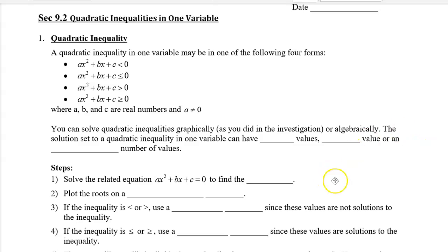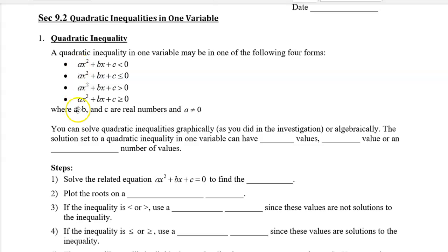We can take a look at these first four inequalities over here. These are all quadratics — you can tell that because they all have a power of 2. They're inequalities because they have a greater or less than symbol. And they're one variable because there's only x, even though we see a, b, and c. But a, b, and c are actually going to be real numbers, and a is not going to be zero — otherwise, if a were zero, then it would be a line.